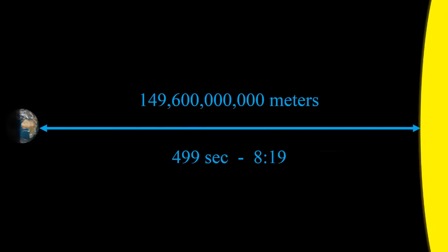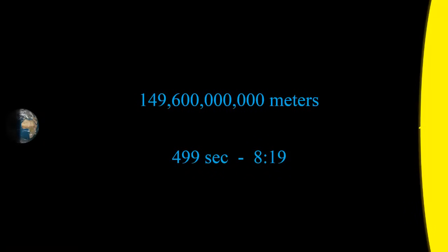So that should be the end of the video, but I have another illustration to show you. I originally was going to show the speed of light by showing a light wave traveling from the sun to the Earth. The problem is it takes 8 minutes and 19 seconds traveling at 300 million meters per second.